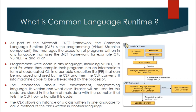Programmers write code in any language, including VB.NET, C-Sharp, and F-Sharp. When they compile their programs, they produce an intermediate form of code called CLI in a portable execution file that can be managed and used by the CLR. The CLR then converts it into machine code to be executed by the processor.